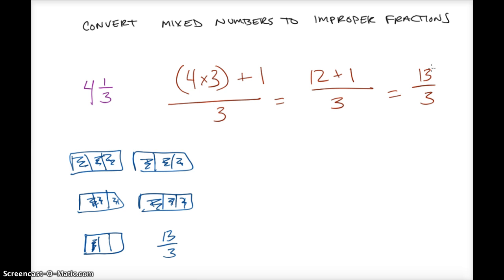And this is the improper fraction of this mixed number right here. Multiply the denominator by the whole number, add that numerator that's left over and keep it all over the same denominator.